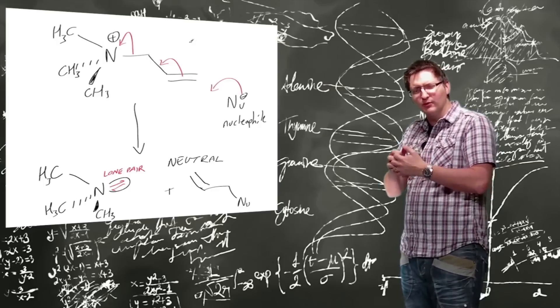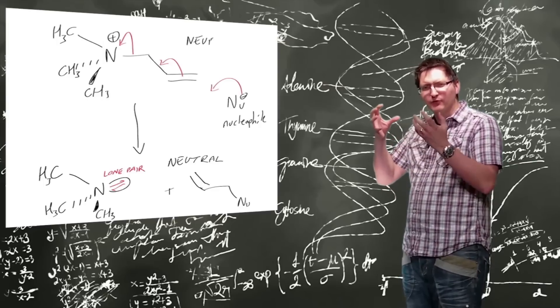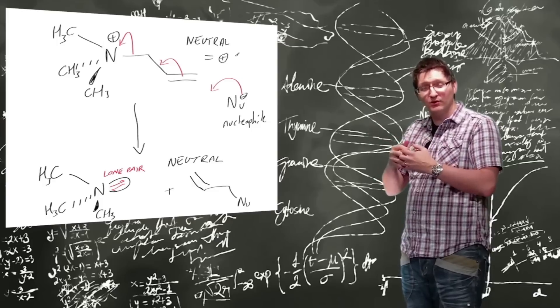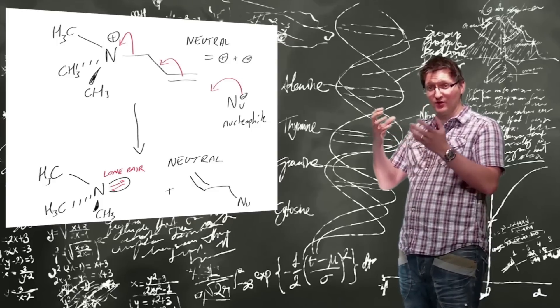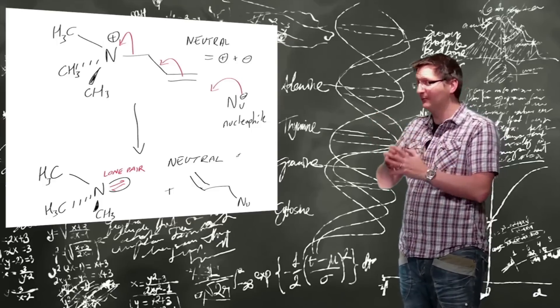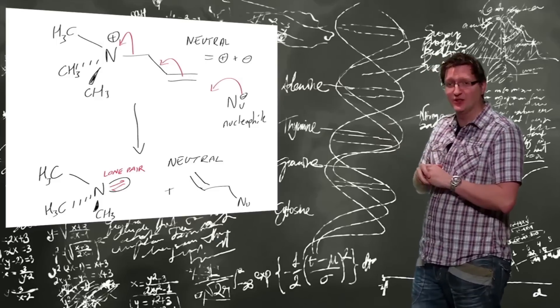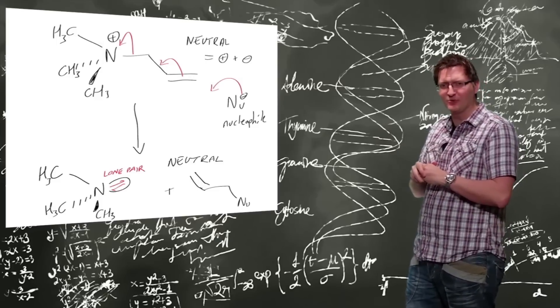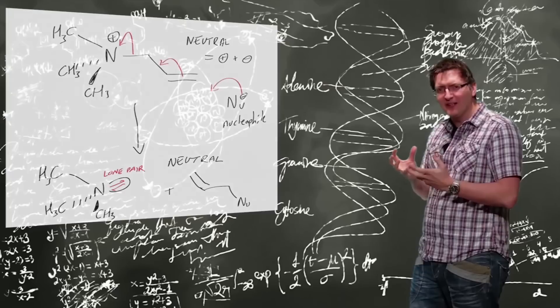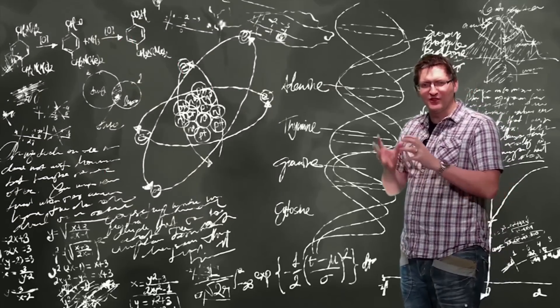So the products are neutral from the reaction because the overall reactants were neutral as well - we had a negative charge and a positive charge which cancel each other out. That's another thing to look out for when doing these reaction mechanisms: make sure all the charge is balanced. I'll put a few examples up of different types of reaction mechanisms for you to have a look at.